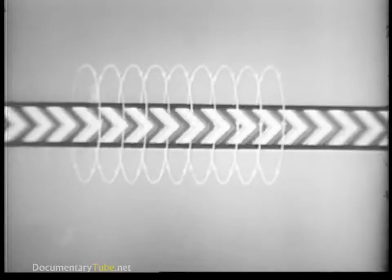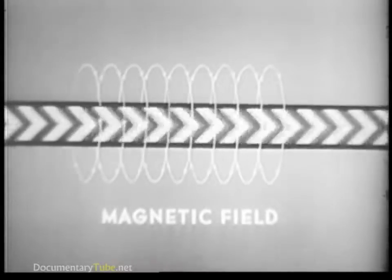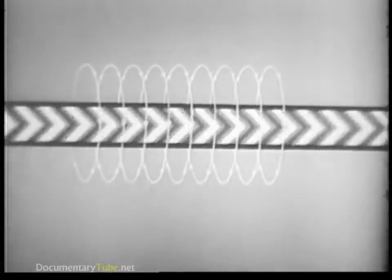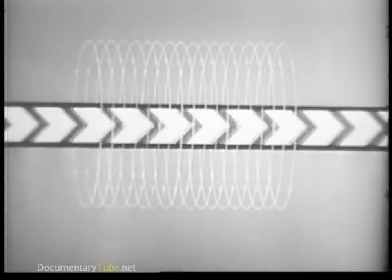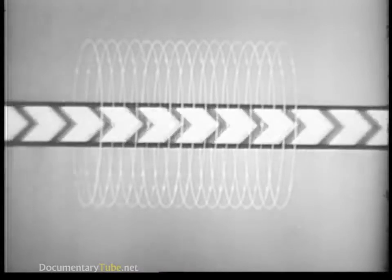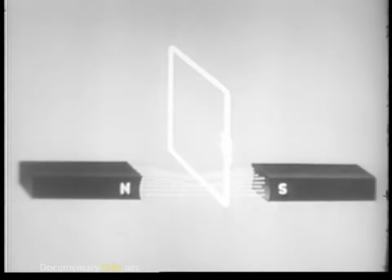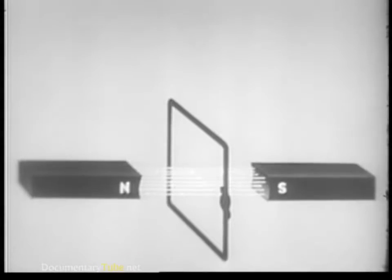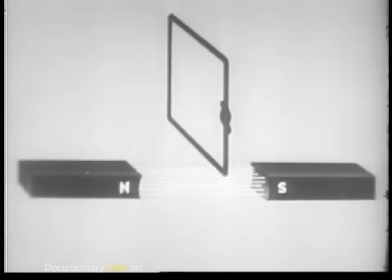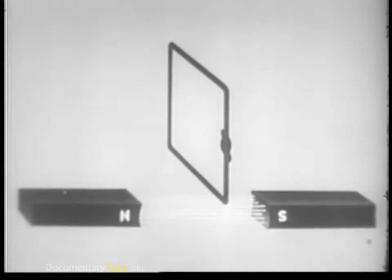But why does the armature rotate when current reaches the starting motor? The answer lies in the relationship that exists between magnetism and electricity. Remember, when current flows along a conductor, a field is produced around the conductor, similar to the field around a bar magnet. The stronger the current, the stronger the field. Furthermore, a magnetic field will cause current to flow if we move a closed loop through it or if we move the field across the loop. The important thing is that there be movement one way or the other.